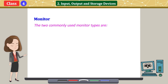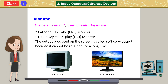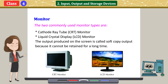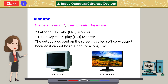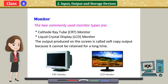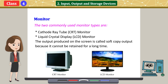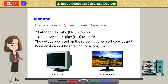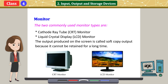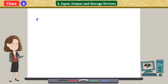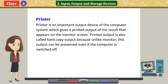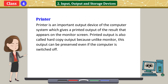The two commonly used monitor types are the Cathode Ray Tube (CRT) monitor and the Liquid Crystal Display (LCD) monitor. The output produced on the screen is called soft copy output because it cannot be retained for a long time. LCD uses a very small amount of electricity compared to CRT.